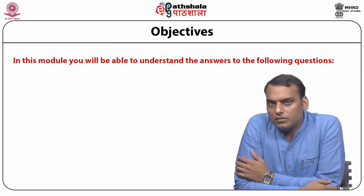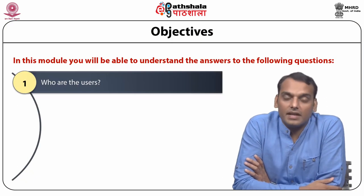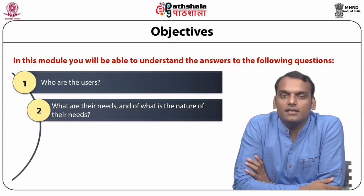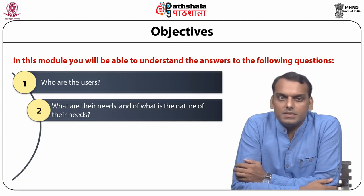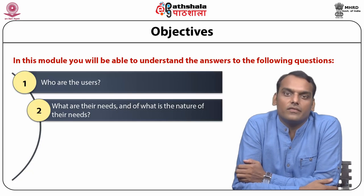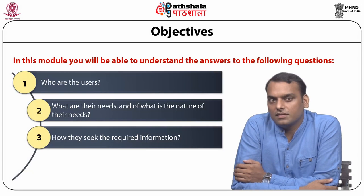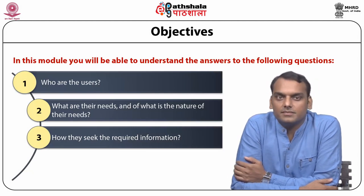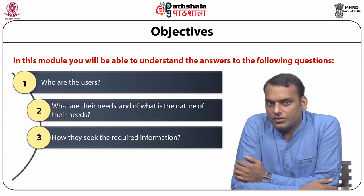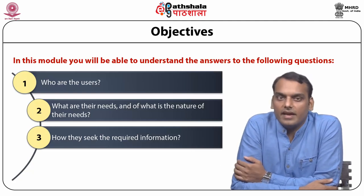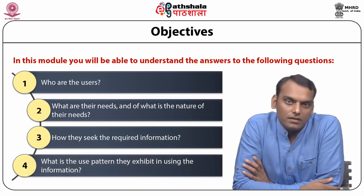For an information retrieval system to be effective and efficient, it is very necessary to understand who are the users, what are their needs and the nature of their needs, how they seek the required information, and what use pattern they exhibit. In this module, we will discuss the various aspects of users, their categories and nature, the concept of information need, types of information needs, more specific information needs in different areas of activities, the information seeking behavior of users, and the various methods generally known as user studies carried out to find the pattern of overall interaction of user with the information retrieval system.